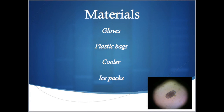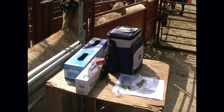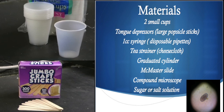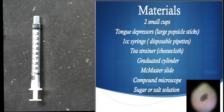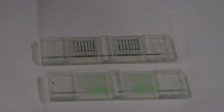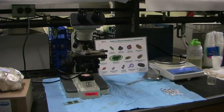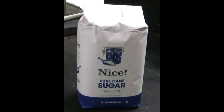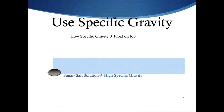In order to perform a fecal egg count, there are a few required materials. Gloves, plastic bags, cooler, and ice packs are needed for fecal collection. Then two small cups, tongue depressors or large popsicle sticks, disposable pipettes or a 1cc syringe, cheesecloth or a strainer in a graduated cylinder, McMaster slide, compound microscope, and a sugar or salt solution for the analysis.